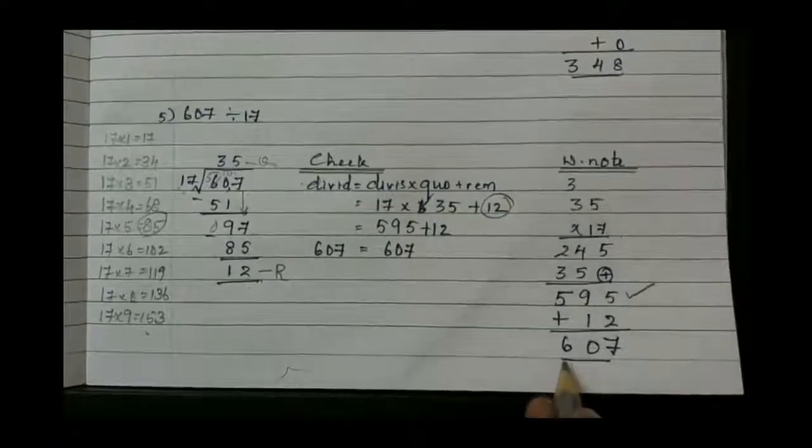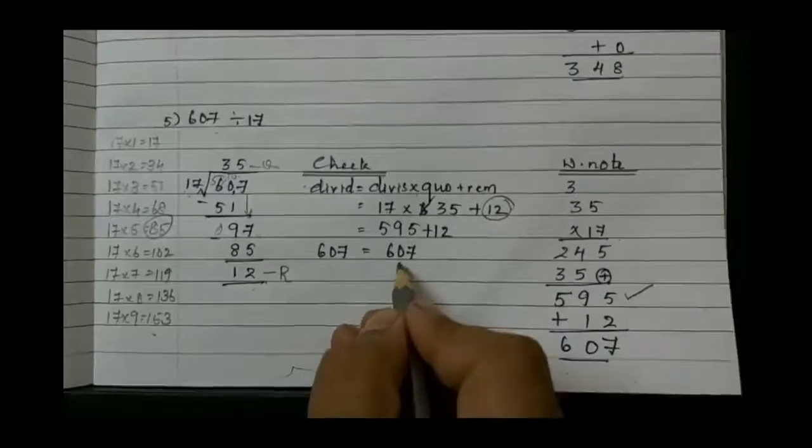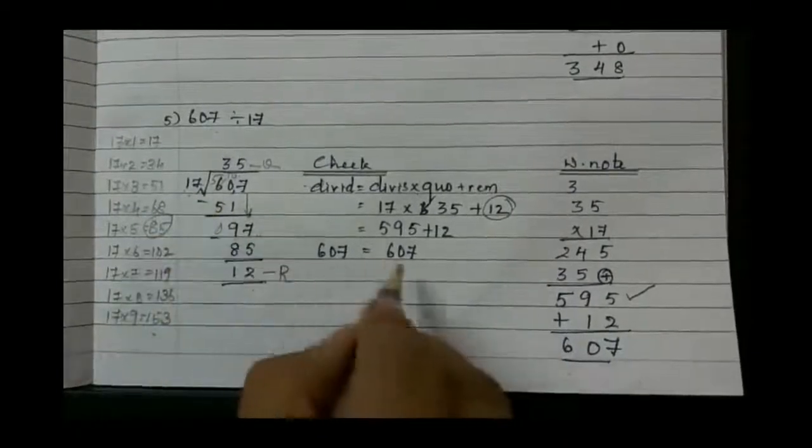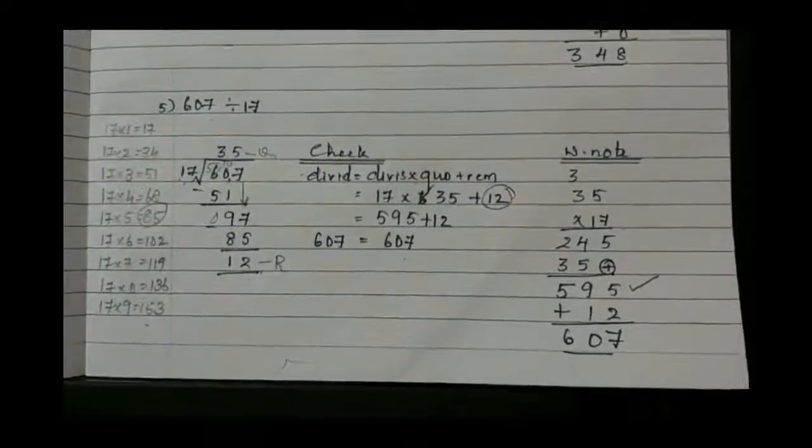Then later on, add by 12. If you add, you are going to get 607. So similarly, it is same as dividend. That means our quotient is right.